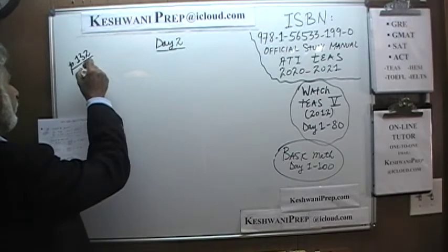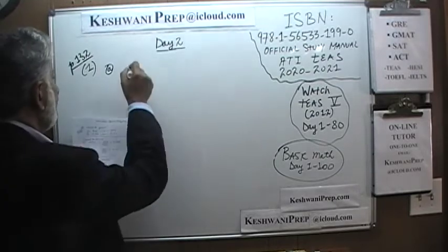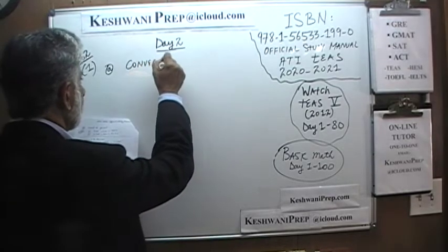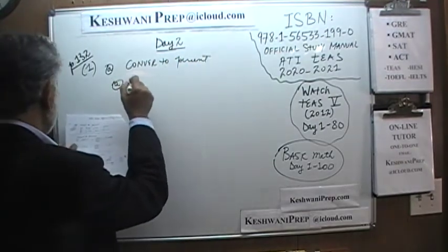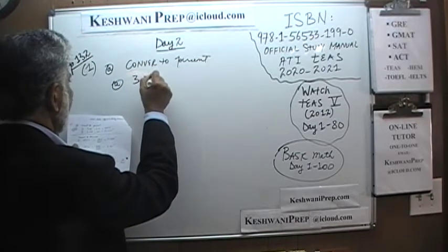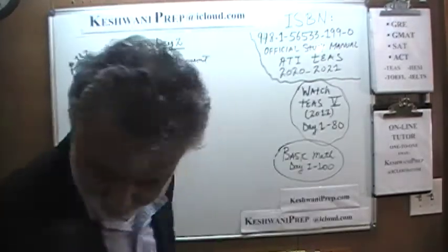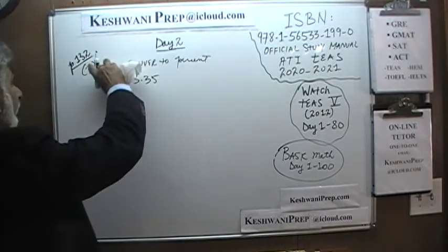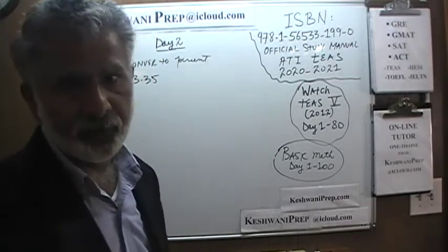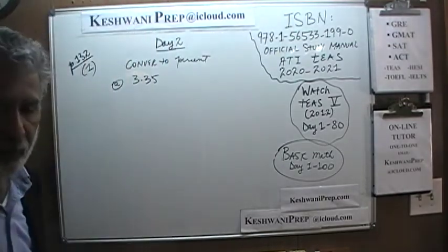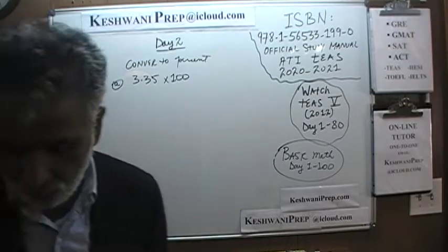Number 1. Number 1 has several parts to it. Part A says: convert to percent. And part A gives us 3.35. We are being asked to convert 3.35 as a percent. What does the word percent mean? Percent means out of 100. So if you have to convert a number into a percent, we simply take it and multiply it by 100.